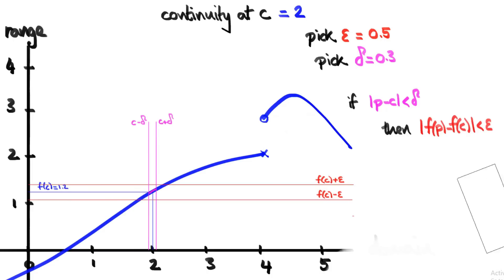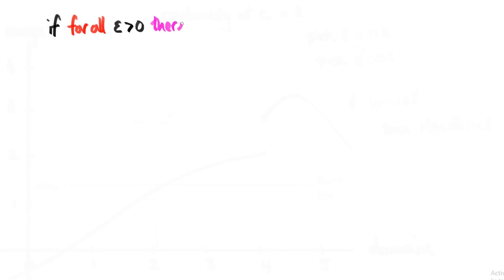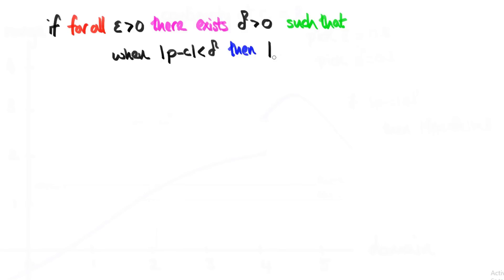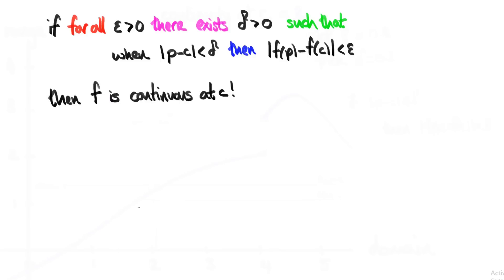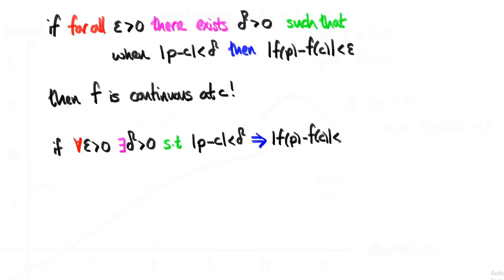So if whatever your friend picks, we can get this condition to be true by picking an equivalently small value of delta, then we say that the function is continuous at c equals 2. If we write that down in a single sentence: if for all positive epsilon there exists a positive delta such that when the distance between p and c is less than delta, then the distance between f(p) and f(c) is less than epsilon, then we say f is continuous at c. In shorthand mathematical notation: for all ε > 0, there exists δ > 0 such that |p − c| < δ implies |f(p) − f(c)| < ε, then f is continuous at c.